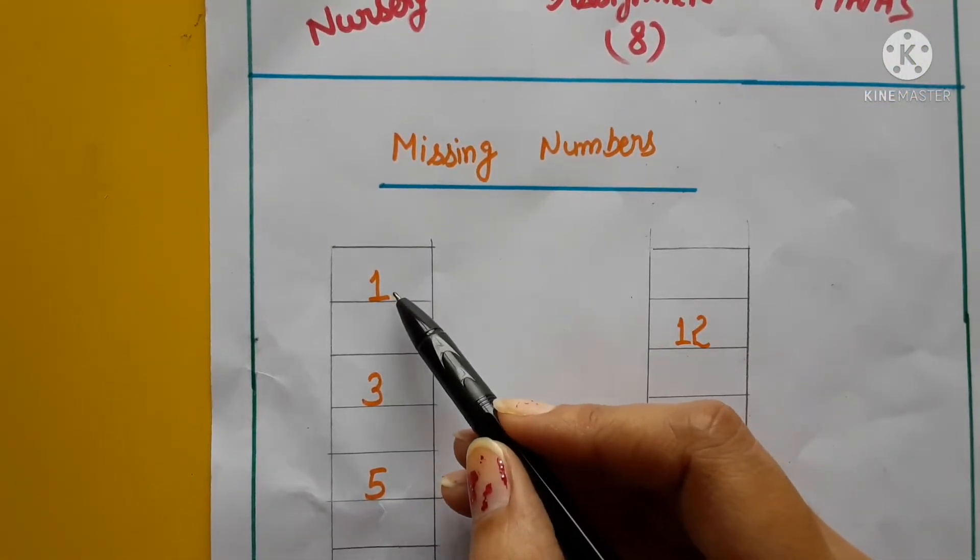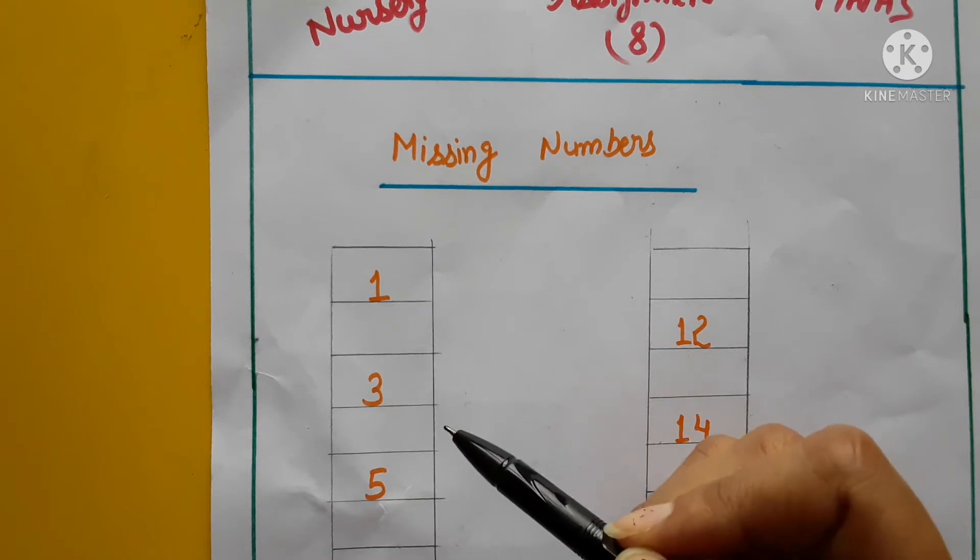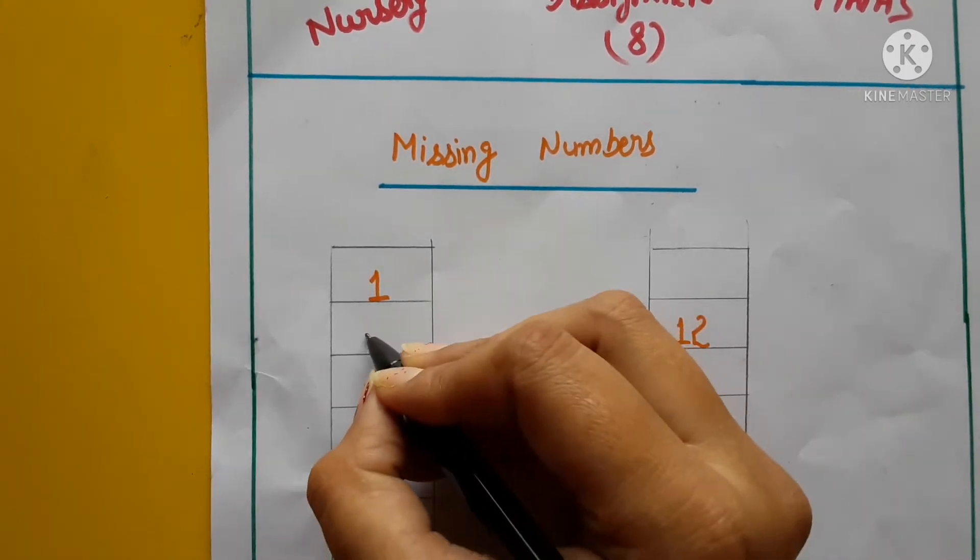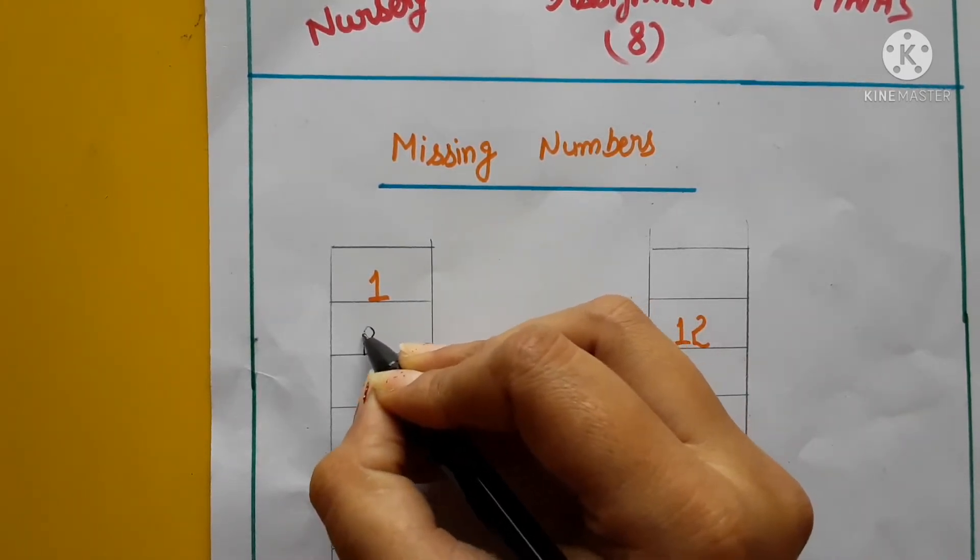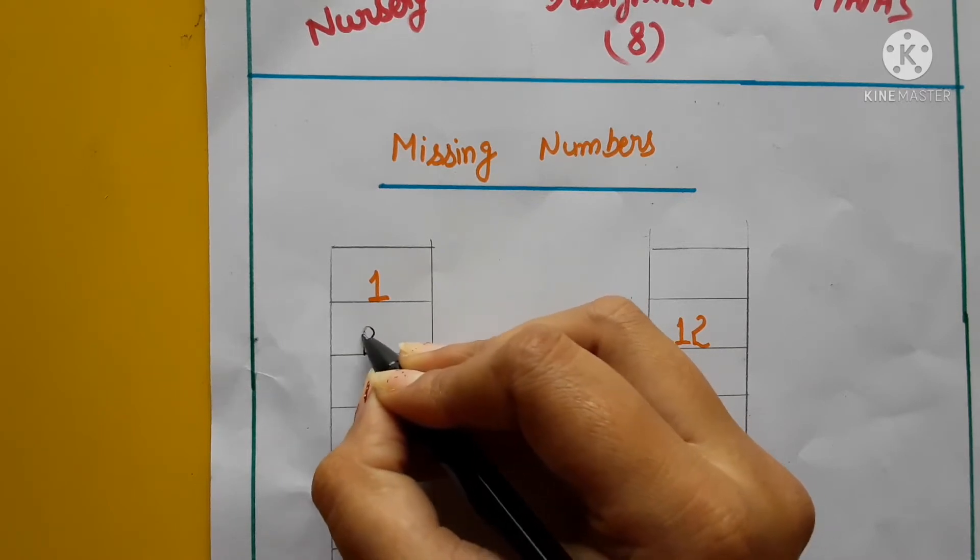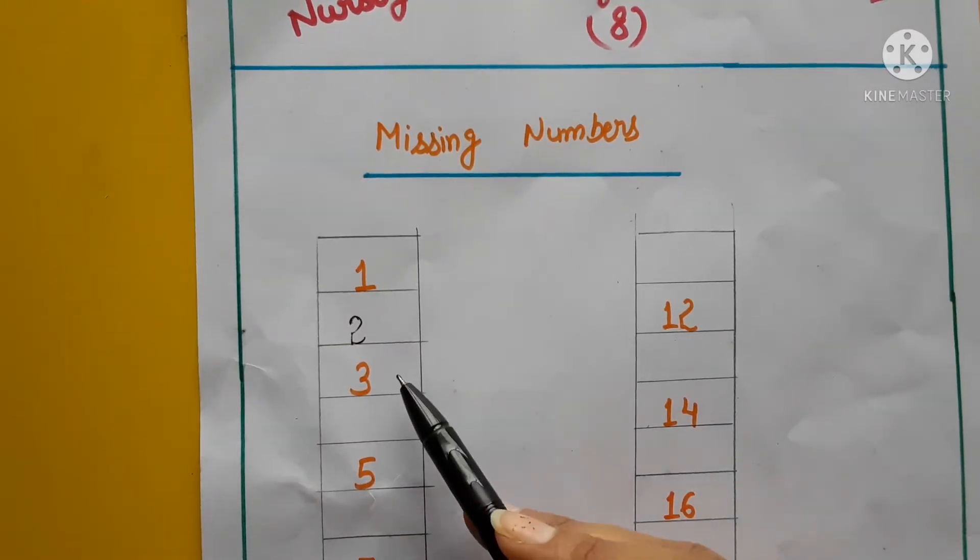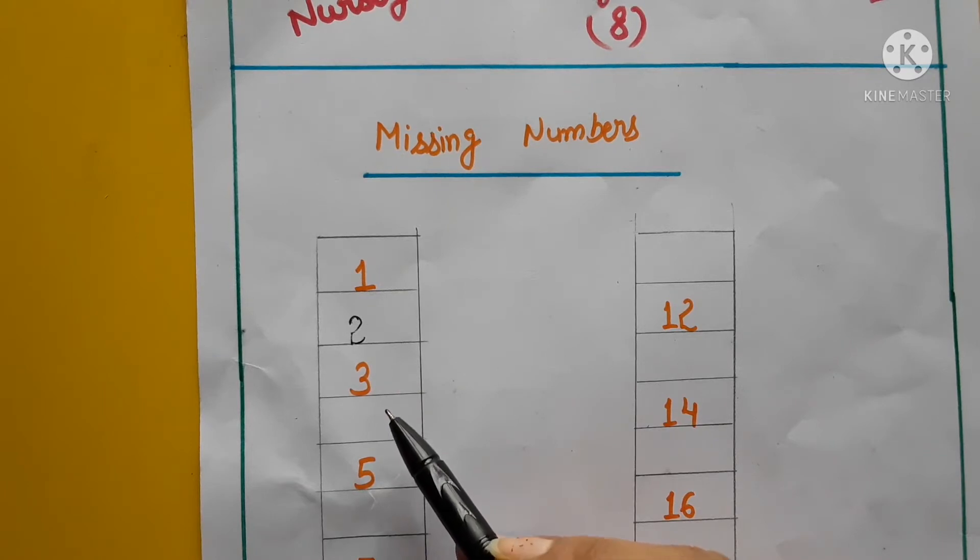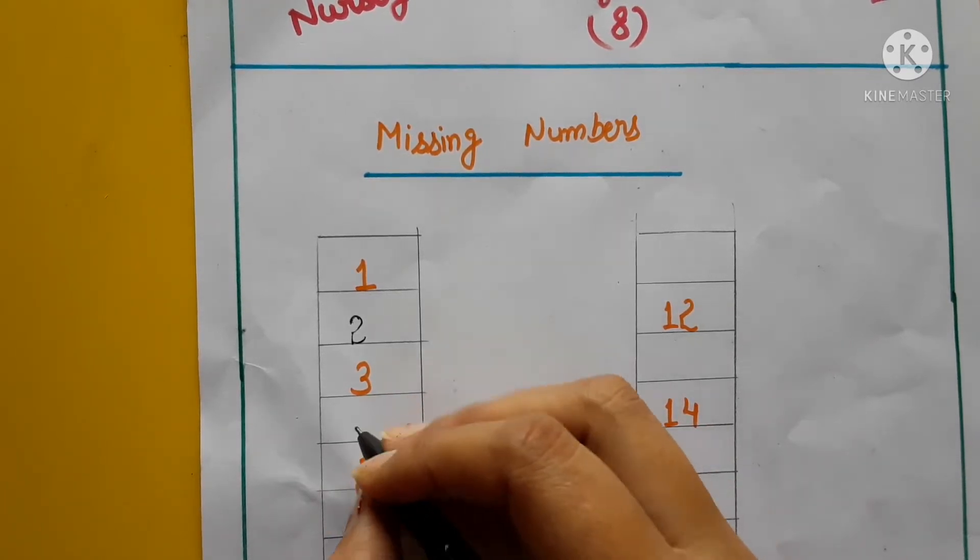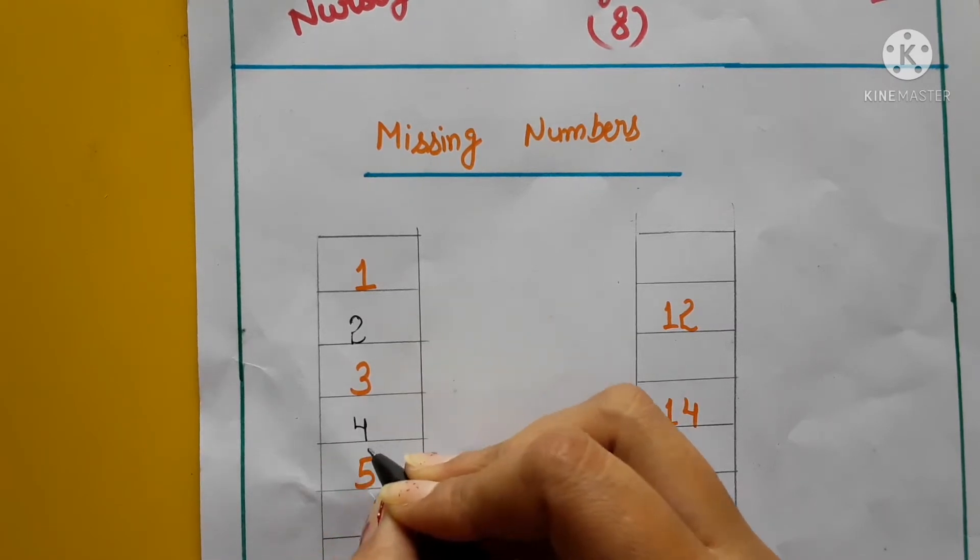First of all, kaunsa digit hai hamara? 1. Toh 1 ke baad kya aata hai? 2. Toh haom yaha pe kya mention karengi? 2, theek hai? Okay, 2 ke baad kya aata hai? 3. Jo already yaha pe mention likha hua hai. And 3 ke baad kya aayega? 4. Toh haom yaha pe 4 fill karengi aase. Okay?